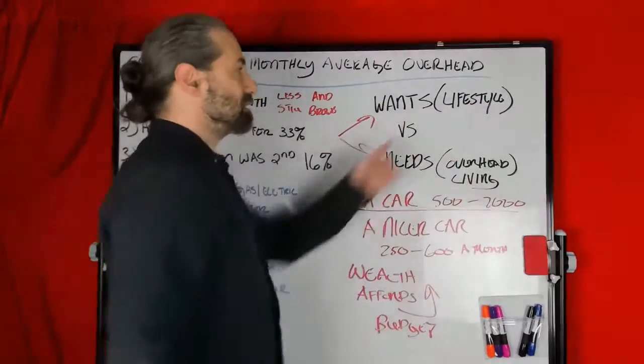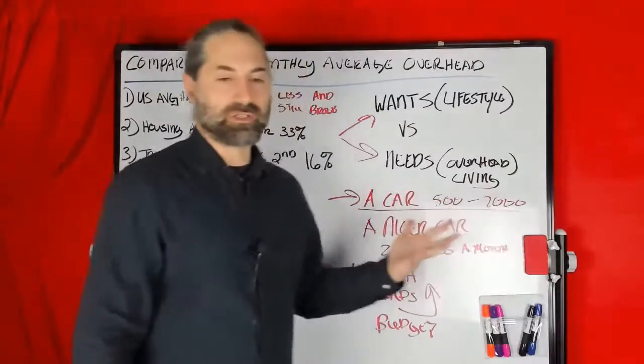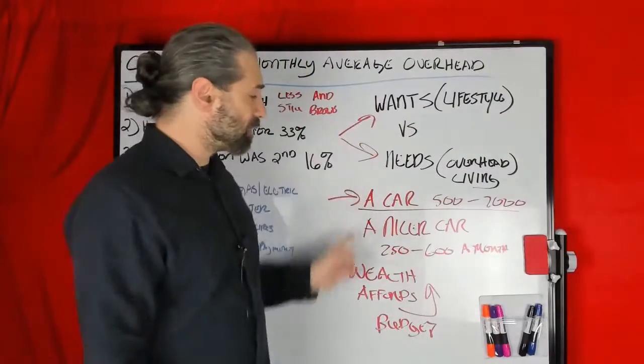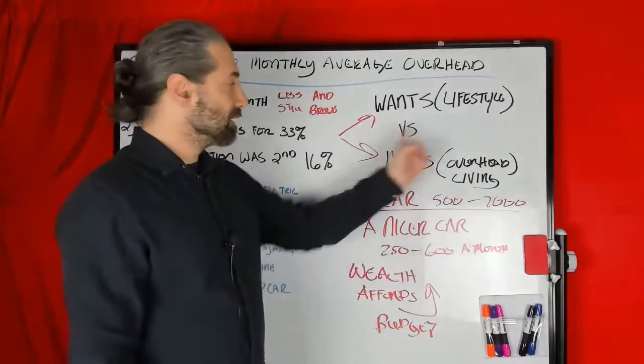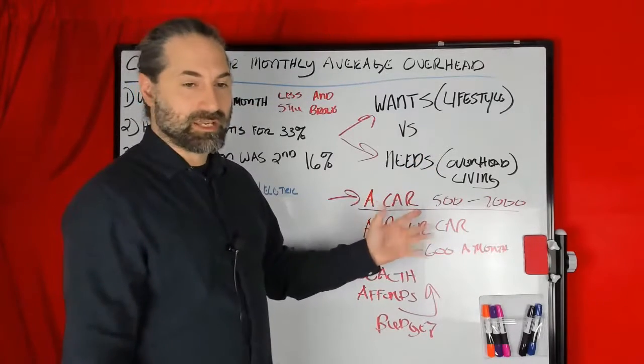Wants versus needs. Wants is lifestyle. Needs is overhead or living. A want would be I want a nicer car. A need is, well, I need a car.